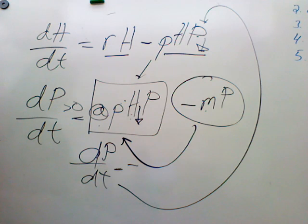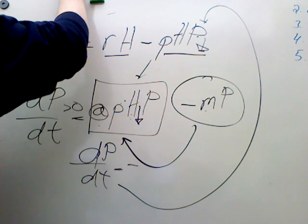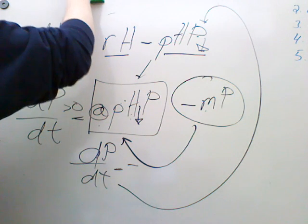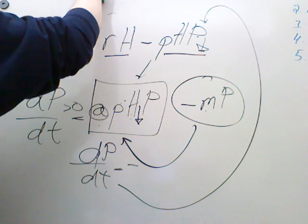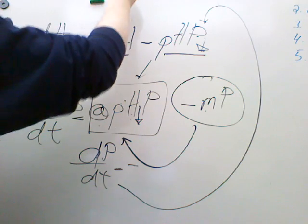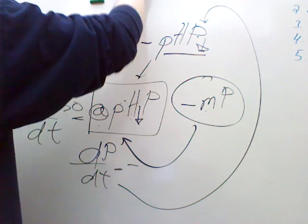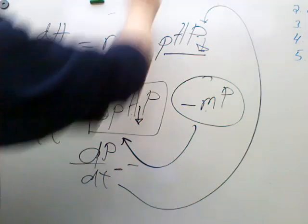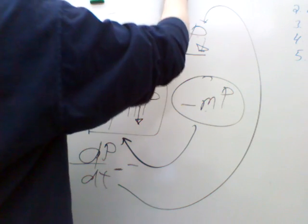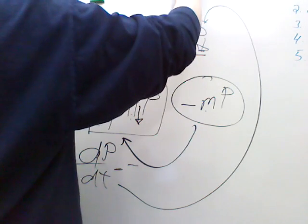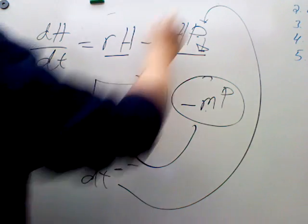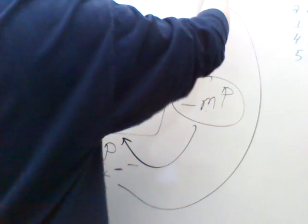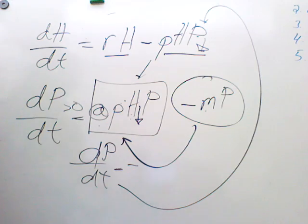So I hope this makes it a little more clearer. And just to sum up, there's four phases. There's the phase where H grows, P goes down, followed by the phase where H and P both grow, followed by the phase where H and P both decline.